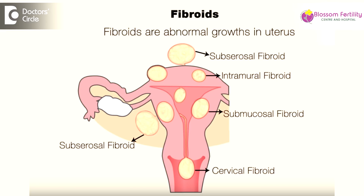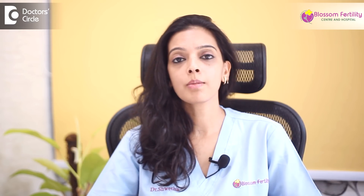First and foremost would be uterine abnormalities like a septate uterus, a submucous fibroid, or something called synechiae, where the uterine walls are touching each other, thereby preventing the implantation of the embryo into the uterine cavity.